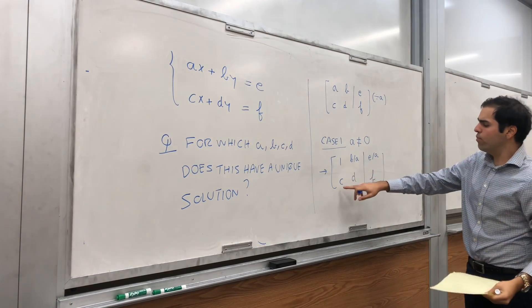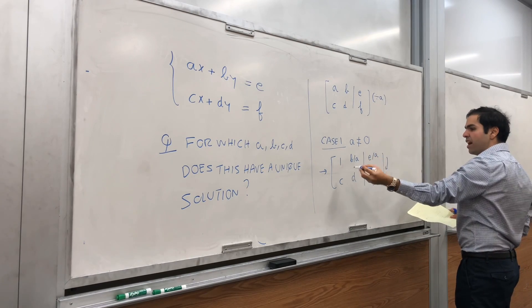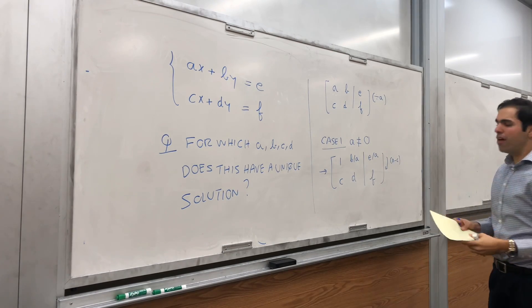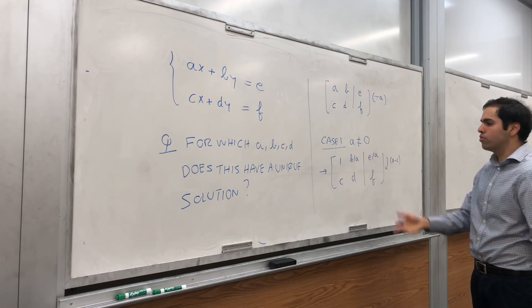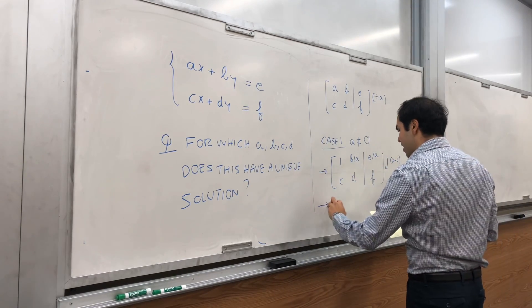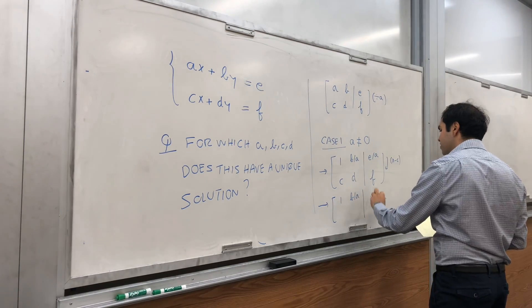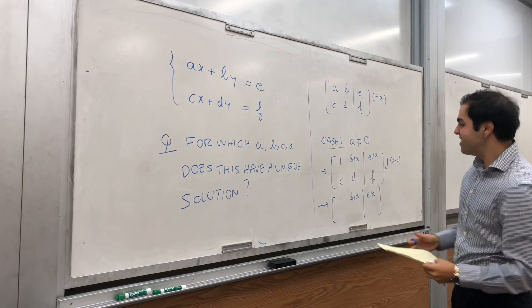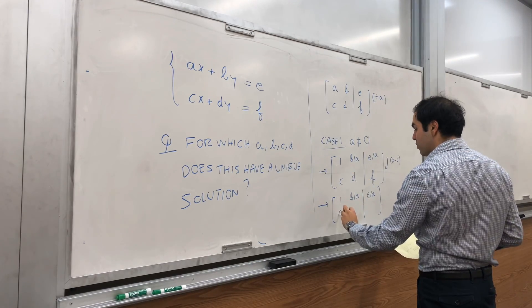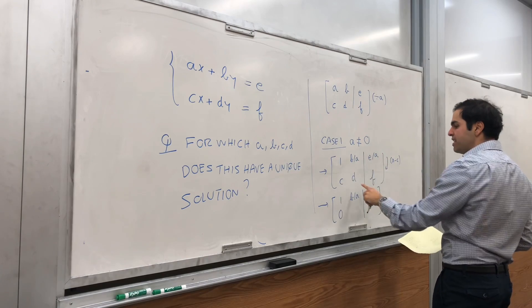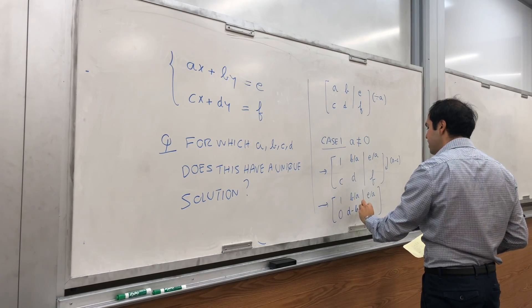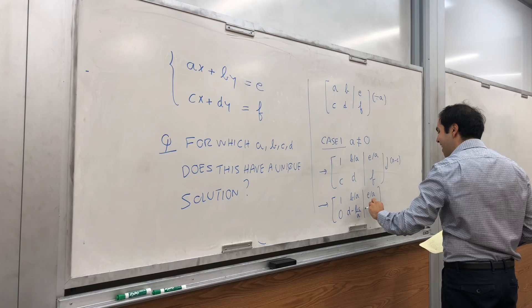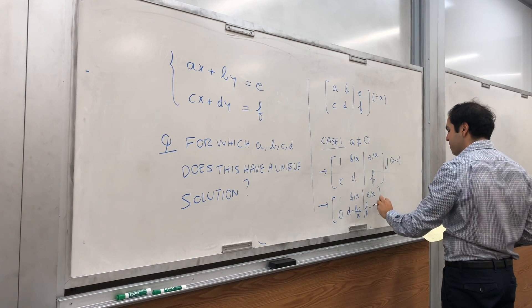And then let's continue. We want to get rid of this C, so let's subtract C times the first row from the second row. And by the way, that's also valid if C is zero, so you wouldn't do anything in this case. And then you get 1, B over A, still E over A. And then this C becomes minus C plus C, which is zero, just what we wanted.